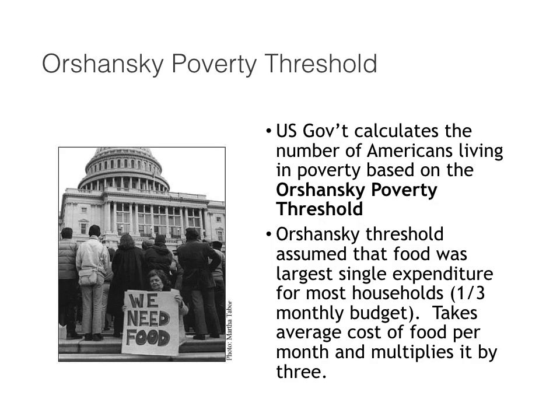American workers might be struggling more now than they were in 1970, but having only 13.5% of households at or below the federal poverty line — well, that doesn't sound too bad. Except it's most certainly higher than that, because the way we measure poverty also hasn't been updated since the 1960s. The U.S. government calculates the number of Americans living in poverty based on something called the Orshansky Poverty Threshold. This establishes the poverty line we use to calculate a person's eligibility for means-tested programs — things we call welfare, such as food stamps.